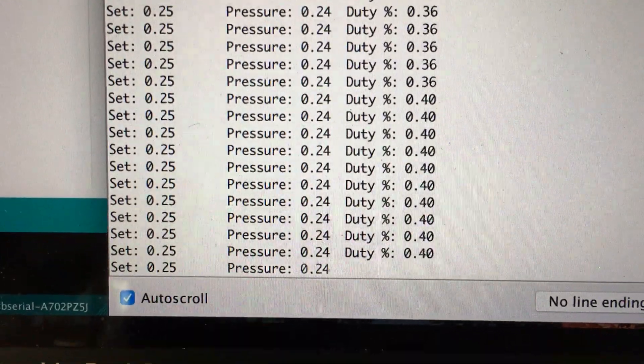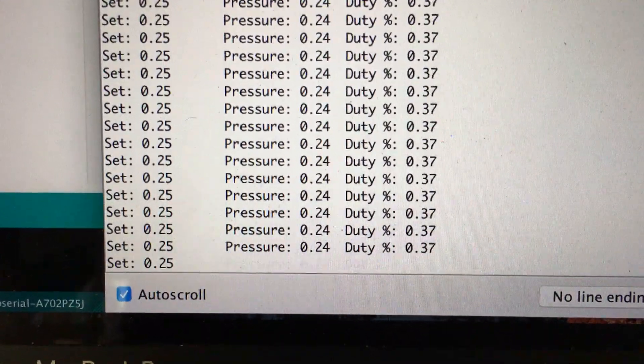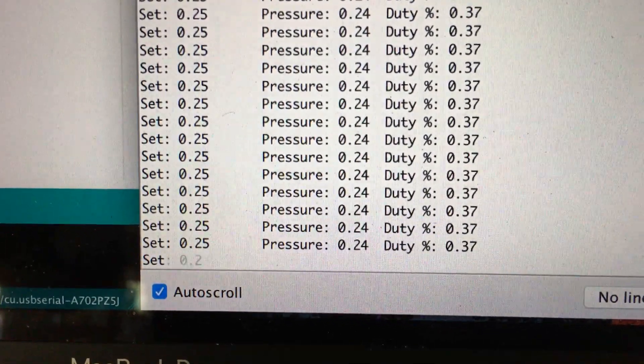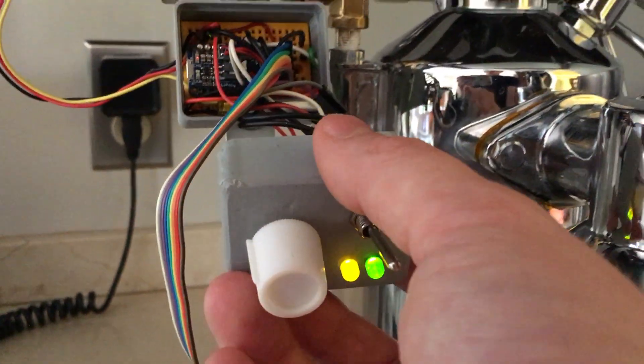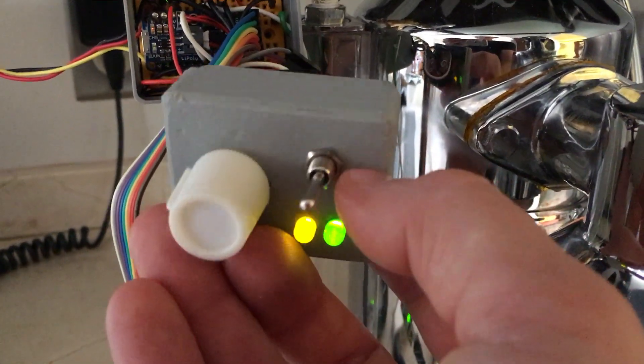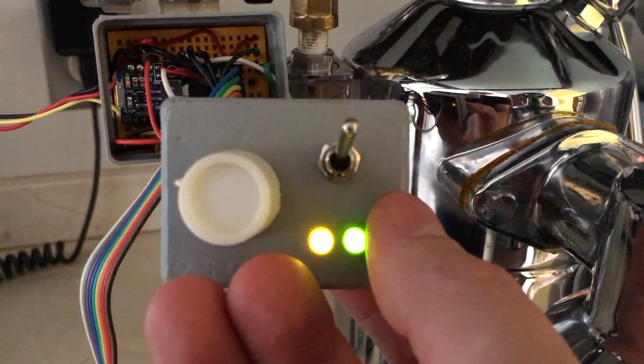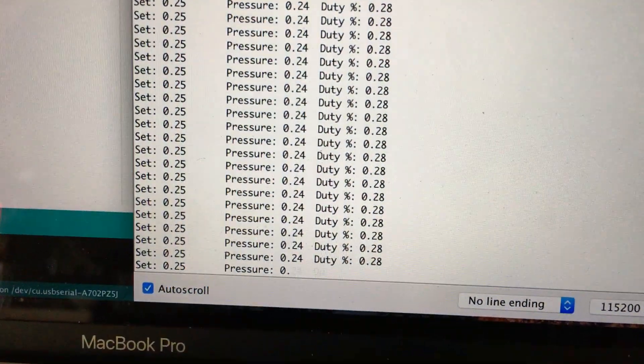0.23, 0.24. So it's getting there. It's close. And then over here, the control box, the light is turned green to let me know that the pressure is within 0.02 atmospheres of the set point. There you go. That is indeed the case.